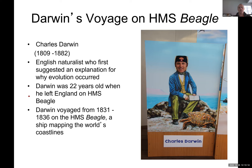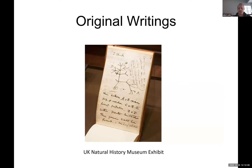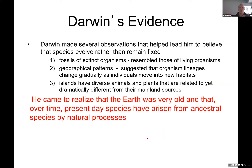Darwin's voyage: this young man in 1831 — he was 36 — traveled on the HMS Beagle to map the world. He was a naturalist and biologist. He traveled from Europe around South America, then stopped in Galápagos, where he developed the theory of evolution from the materials he collected. Then he moved south by Tahiti, Australia, and back to England — a voyage of about five years. His original writings are exhibited at the UK Natural History Museum.